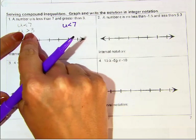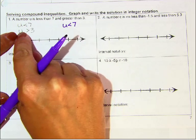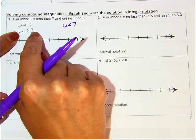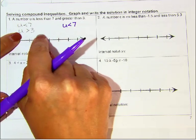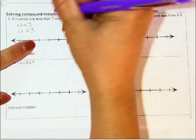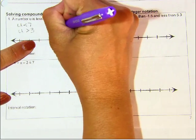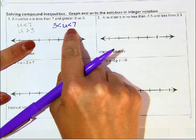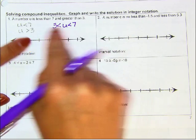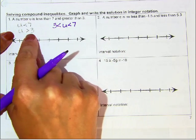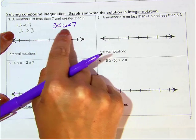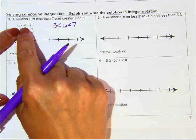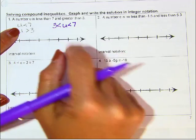The bigger part of my symbol opens towards that U. U is bigger than 3, but I want 3 written first here, so I'm going to switch this. If I flip it, I have to flip the symbol. So now I have 3 is less than U, less than 7. That still works — 3 less than U means the same thing as U is bigger than 3. And U is less than 7.